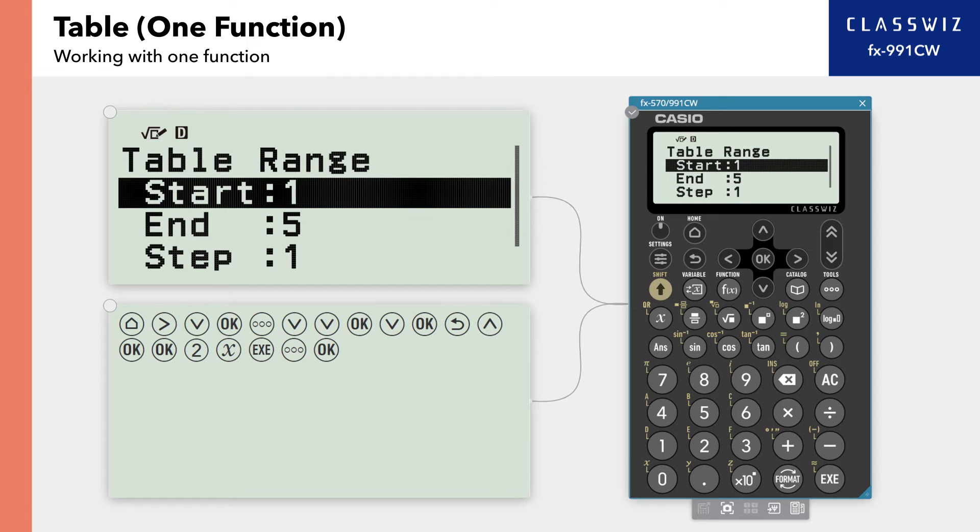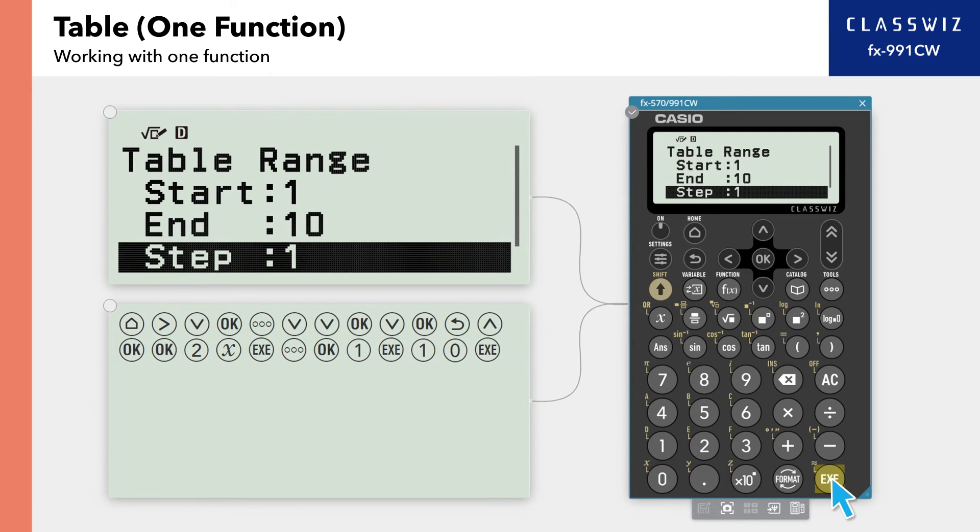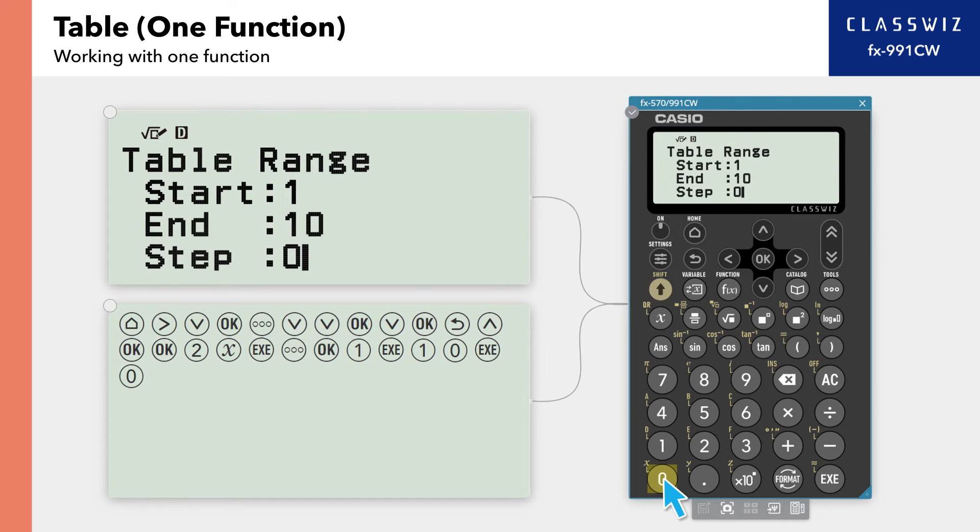In this example, we'll set the range of X to 1 through 10. Enter 1 for Start and 10 for End. To show function values in increments of 0.5, enter 0.5 for Step.